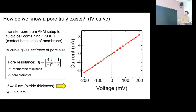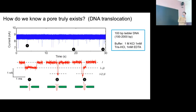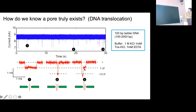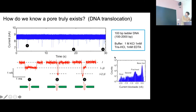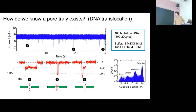We add DNA to the cell — just a ladder, nothing particularly fancy — and we look at classic blockade signatures. Zooming in, we see the classic signatures of folding: a linearized translocation, a translocation with a fold showing two current levels, and a double-folded event. Histogramming the data shows peaks corresponding to the linear translocation, folded, etc. This is classic data first obtained around 2001, consistent with what you'd expect for about a 10 nm pore.